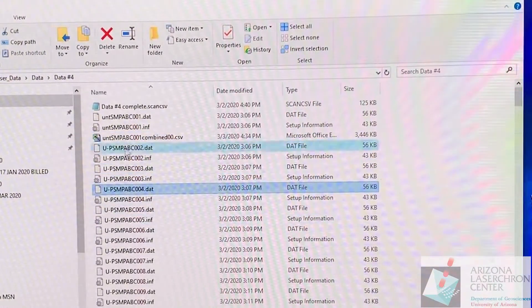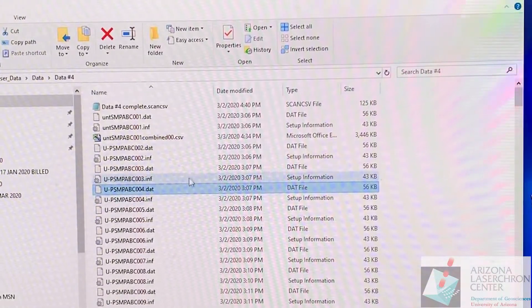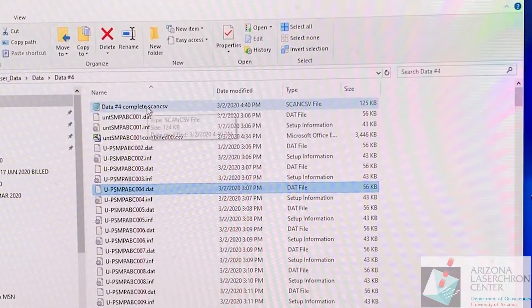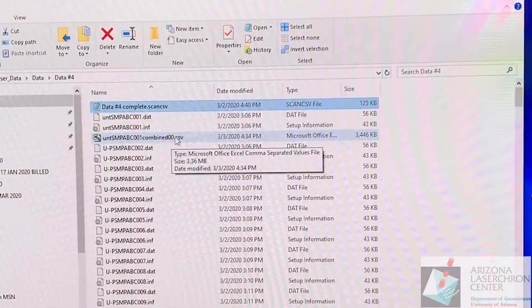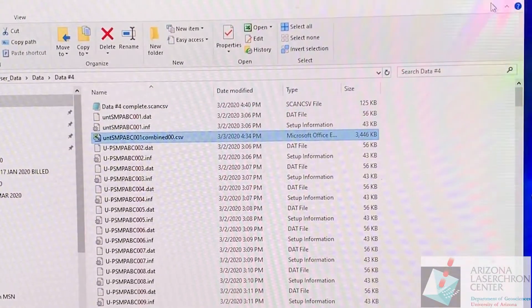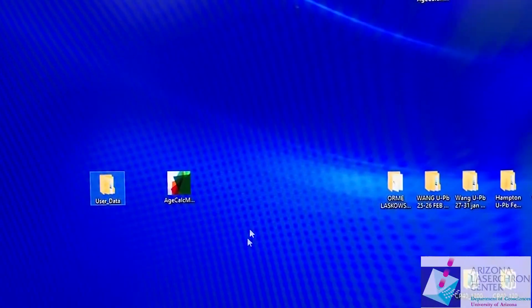These dat and imp files will be completely ignored by AgeCalcML. All we really need is this completed scan CSV and this combined file. That's the data that we're going to be working with.